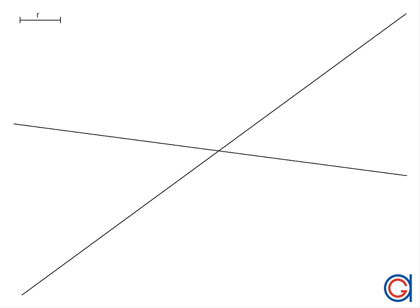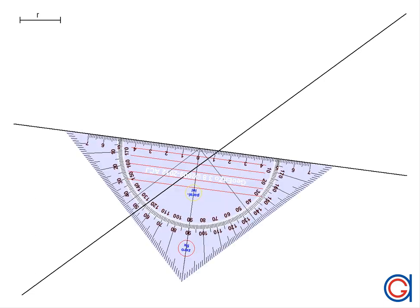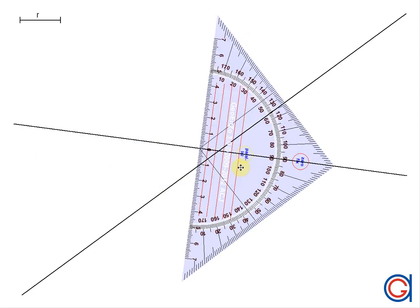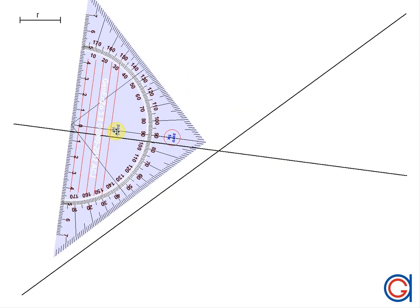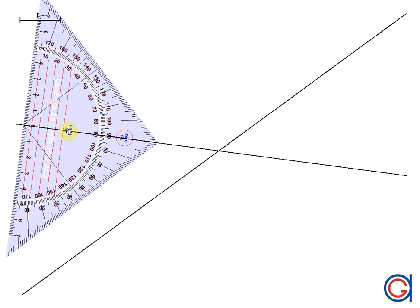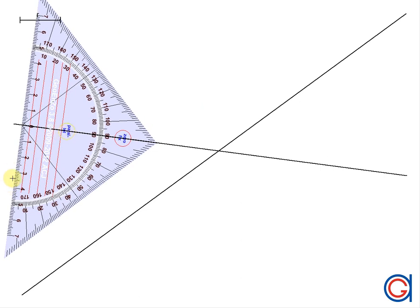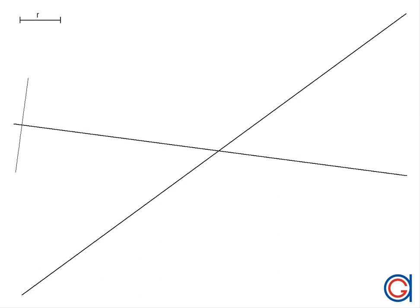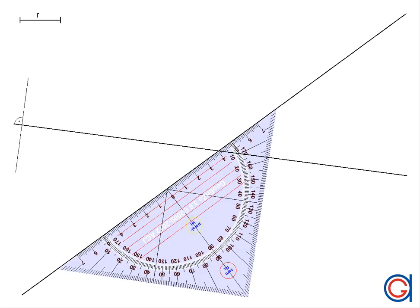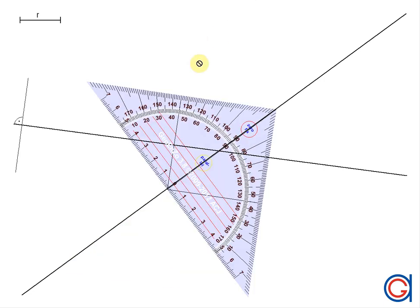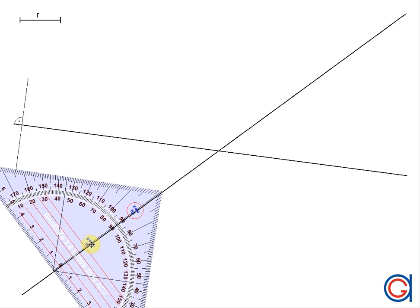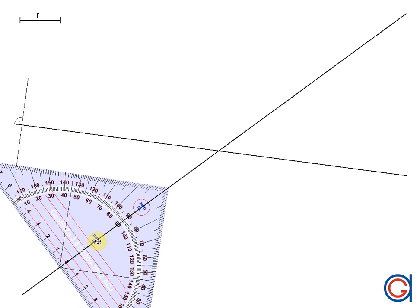To start, we are going to draw a perpendicular line above and below the given intersecting lines. The only stipulation is this perpendicular line must be longer than the given radius r. We draw our first perpendicular line above and below, as can be seen here, marked with a 90 degree angle.